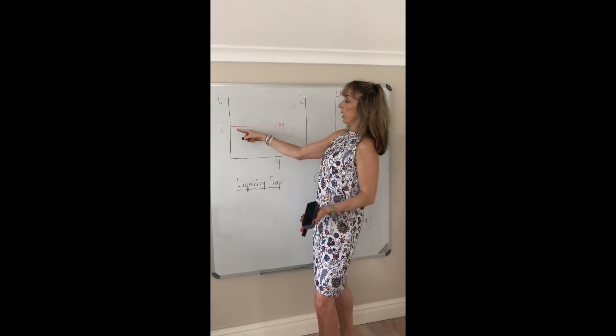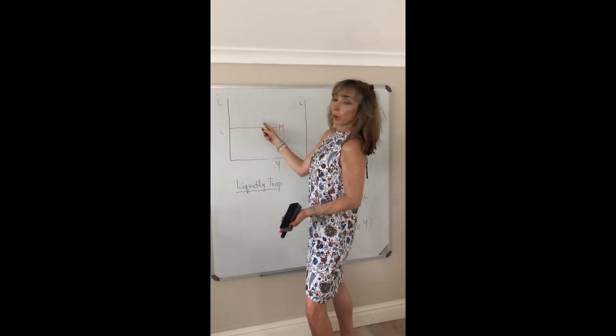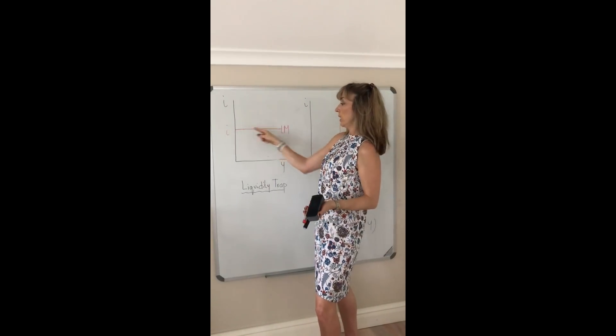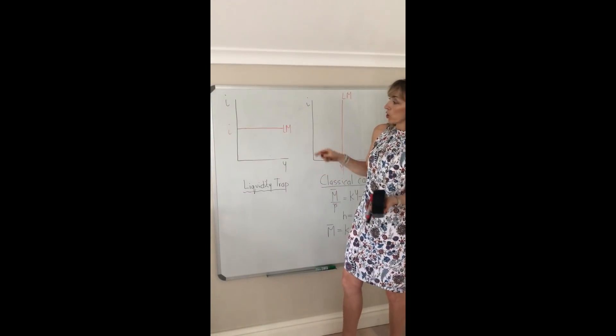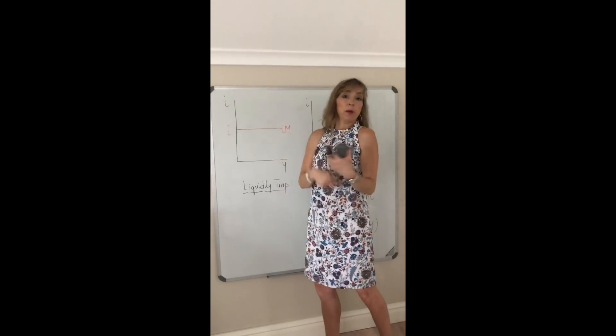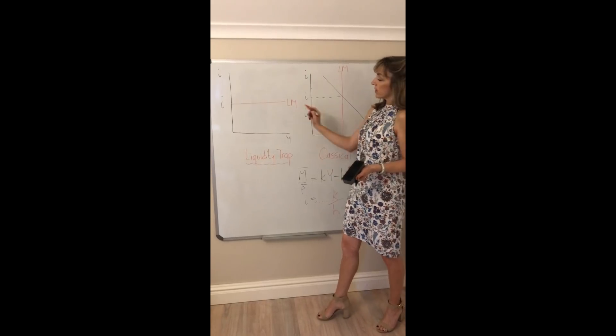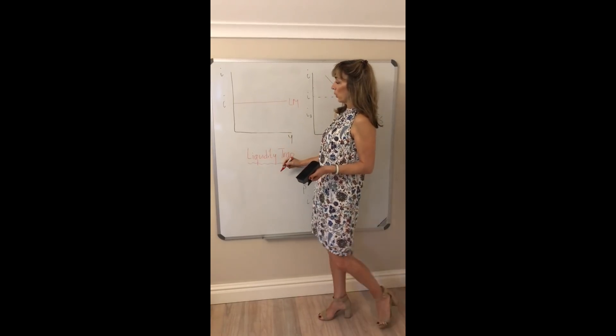As opposed to here where as your LM curve becomes flatter, we see that the value of H rises. And here we have a situation where at a given interest rate, the public are actually prepared to hold any quantity of money. And this is called a situation of a liquidity trap.